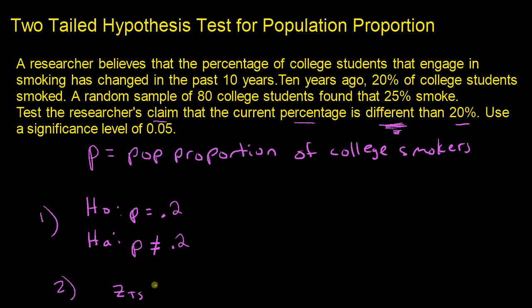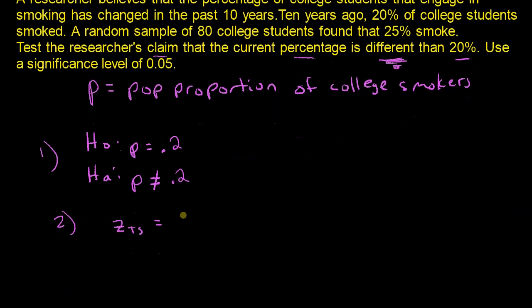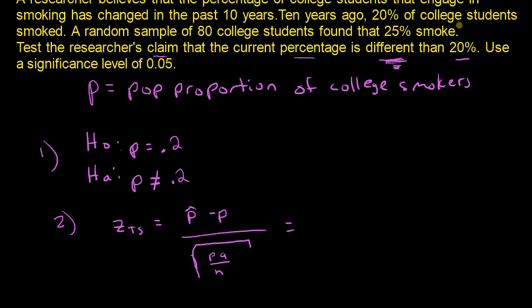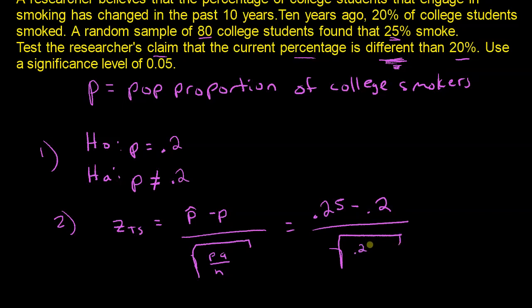Step two: calculate your test statistic. The formula is Z = (P-hat minus P) divided by the square root of PQ over N. P-hat, the sample proportion, comes from the random sample of 80 students that found 25% smoked — so P-hat equals 0.25. P comes from the null hypothesis: P equals 0.2. Q is 1 minus P, so Q equals 0.8. N, the sample size, is 80.